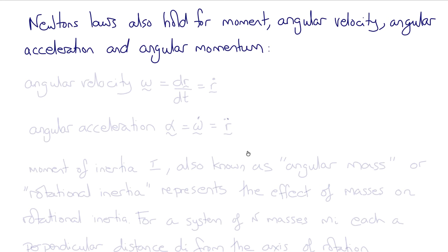Angular velocity, omega, is the time derivative of the angle, so dθ/dt, or theta-dot for short.